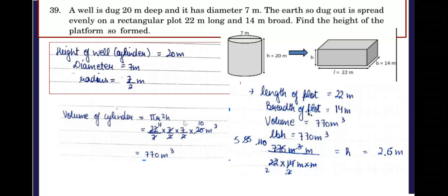Now this volume 770 cubic meters has to be equal to volume of the cuboid, so that is l into b into h. So this is 22 into 14 into h. So 22 into 14 into h has to be equal to 770. We can simplify this and when we simplify this, the answer comes out to be 2.5 meters.